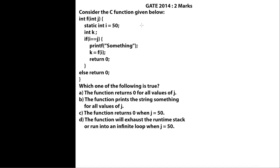This question was asked in GATE 2014. They define a function int f taking integer j, with a static variable i storing the value 50, and an integer k. There is an if condition: if i is double equal to j, meaning if the value of i equals the value of j. Since i is 50, if these values are equal, we print a statement and then make a recursive call, passing the value of i, which is 50.